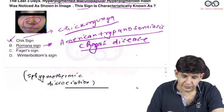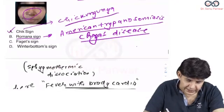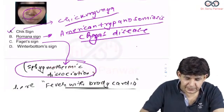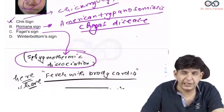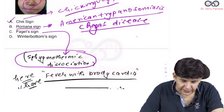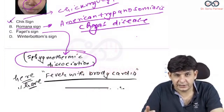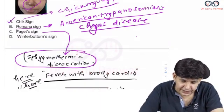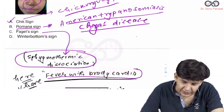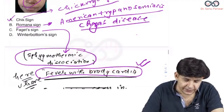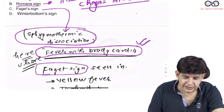Regarding the Faget sign, what is Faget sign? Faget sign is this particular entity called sphygmothermic dissociation. What is the meaning of sphygmothermic dissociation? Generally you see fever with tachycardia, but what happens here? Fever with bradycardia. This is what is termed as Faget sign.